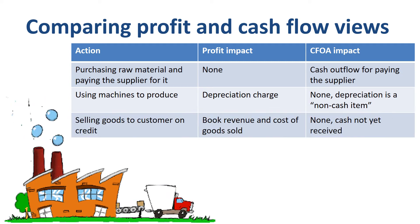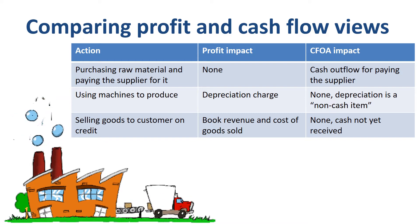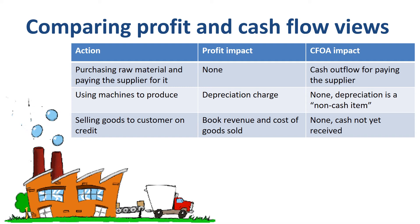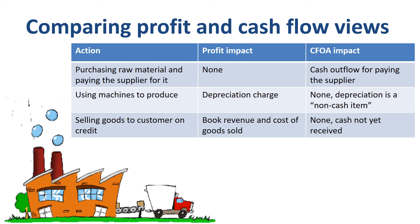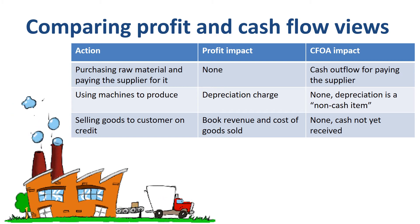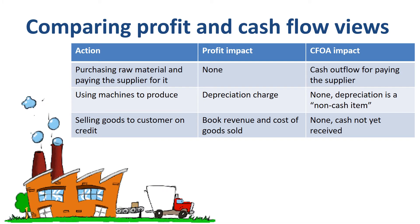If you sell goods to a customer on credit, you book the revenue and cost of goods sold of that sale when the goods are delivered and you meet all the revenue recognition criteria. The difference between the revenue and the cost of goods sold is your margin. For cash flow, this transaction does not do anything, as no cash is coming into the company yet until the customer actually pays you.